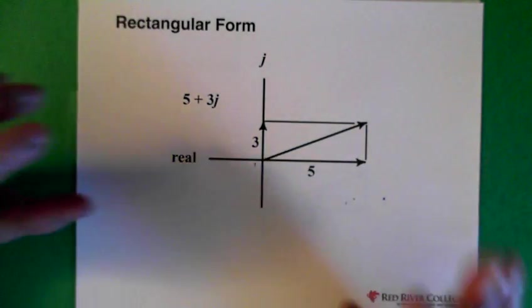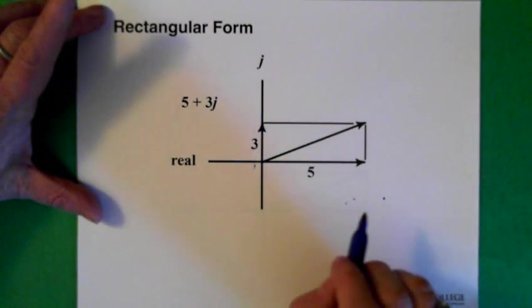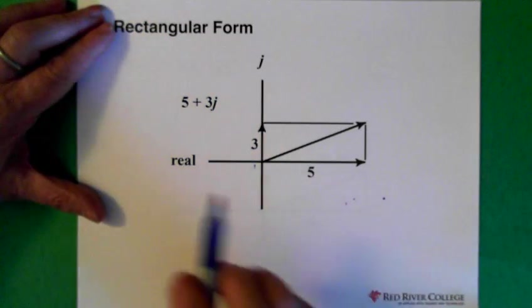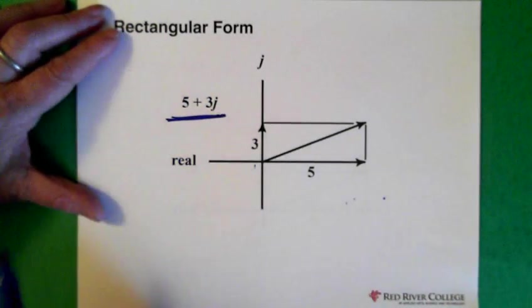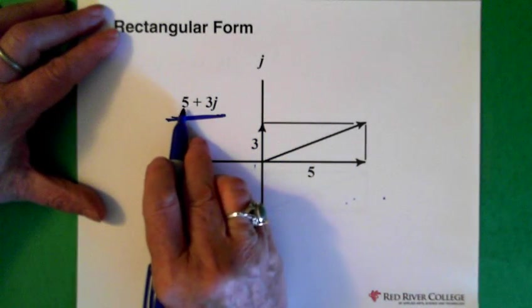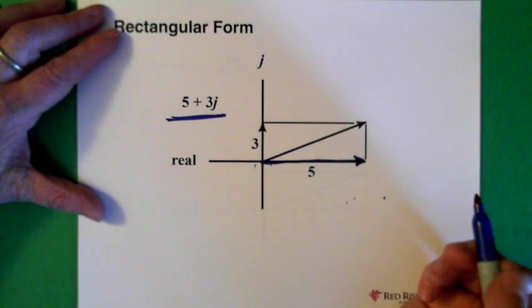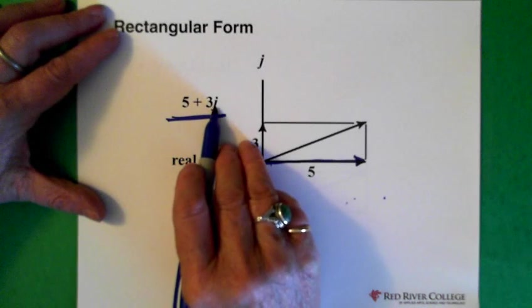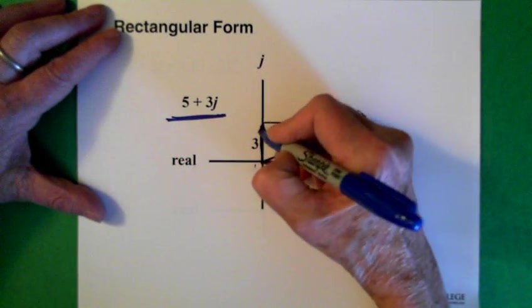Now, there's two different forms for complex numbers. There's rectangular form and polar form. So, this here is rectangular form. So, what that means is the 5 here is on the real axis.